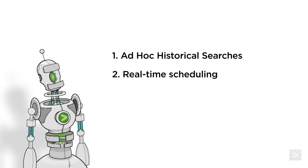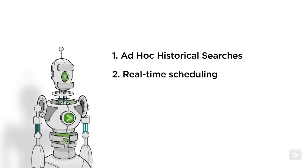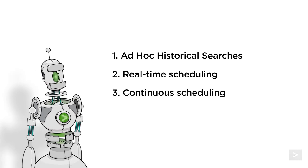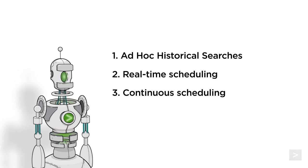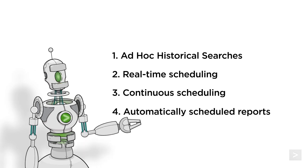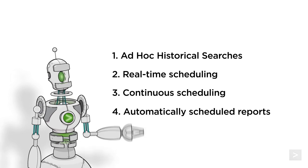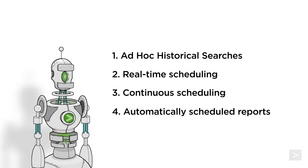The second priority goes to manually scheduled reports and alerts with real-time scheduling, which is the default scheduling type. The third priority goes to manually scheduled reports and alerts using continuous scheduling. Continuous scheduling mode is used by scheduled reports that populate summary indexes, as well as other scheduled reports that cannot have a gap in the collection of report data. Last priority goes to automatically scheduled reports that generate and update acceleration summaries for report and data model acceleration.